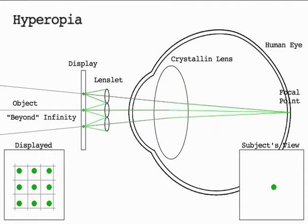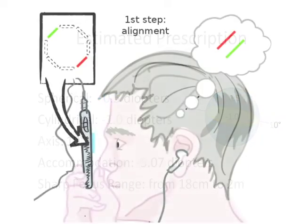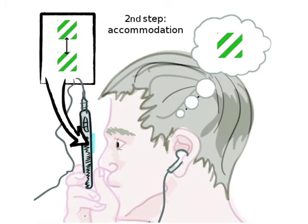By knowing how much points move on the screen, our method can compute the subject's refractive errors as well as the range of accommodation. We designed and evaluated a two-step interactive method based on smart patterns: one for detecting where the subject is focusing, and the other for changing accommodation state.